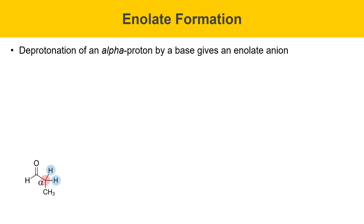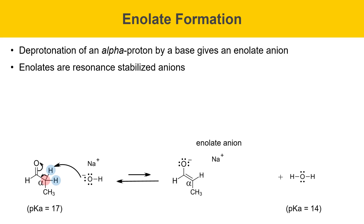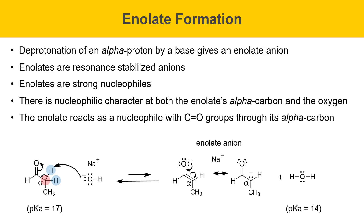On this slide we'll talk about enolate formation. Deprotonation of the alpha proton by a base gives an enolate anion. The protons on propanol have a pKa of about 17. In the presence of sodium hydroxide, the hydroxide base can deprotonate one of these protons, giving the enolate anion and water. Water has a pKa of 14, so it's a stronger acid than propanol, meaning the equilibrium doesn't favor enolate formation — you get a little bit of enolate, but not a lot. Enolates are resonance-stabilized anions, and we can draw a resonance structure by pushing electrons from the oxygen down onto the alpha carbon. Enolates are strong nucleophiles with nucleophilic character at both the alpha carbon and the oxygen. In the aldol reaction, the enolate reacts through its alpha carbon, which attacks the carbonyl of another propanol molecule.